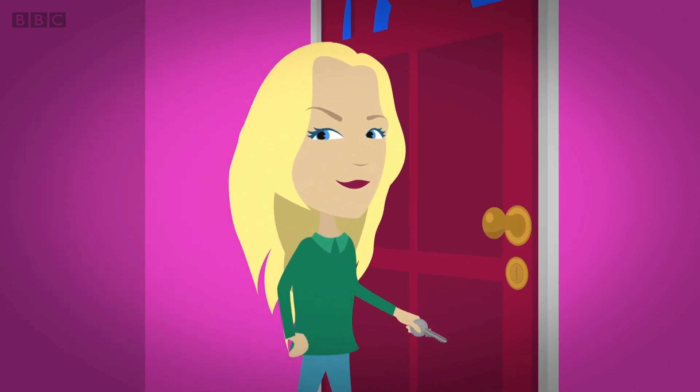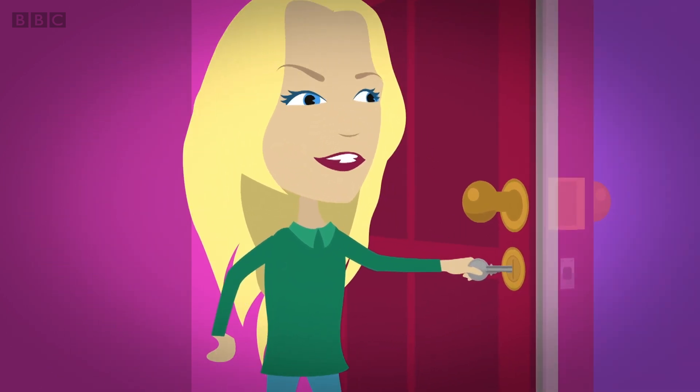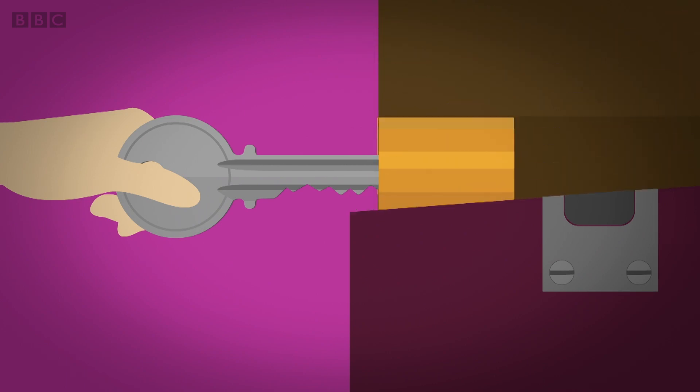When you put a key in a lock, it goes through the keyhole and into the metal tube, called the barrel.